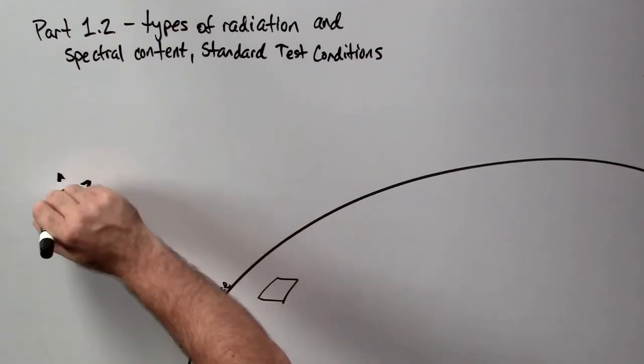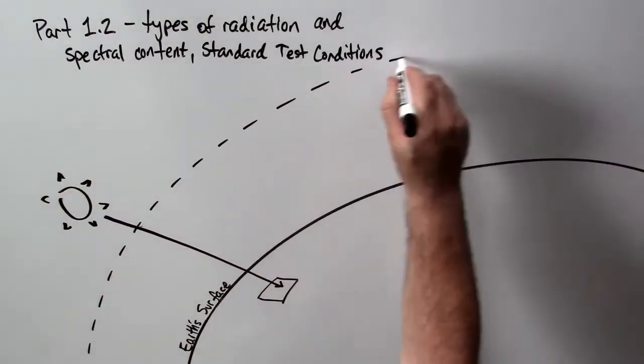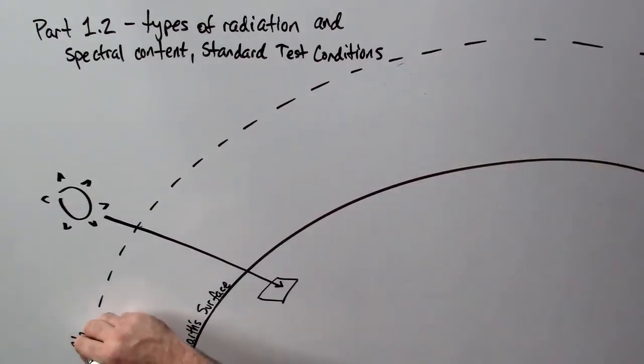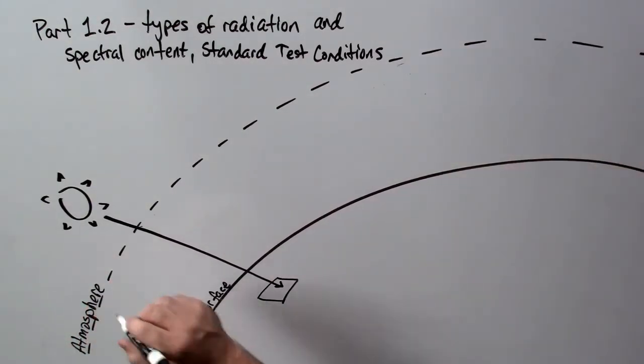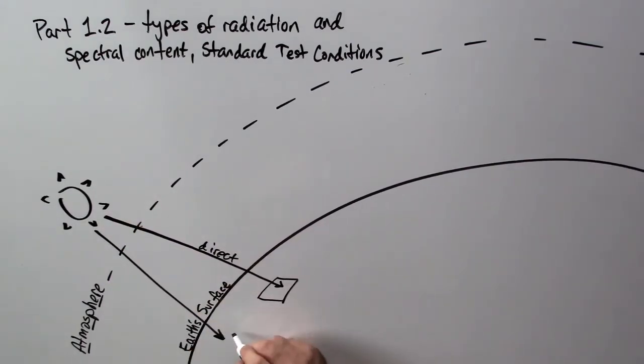Imagine the Earth's surface, and on that surface we have a solar panel. The sunlight that comes from the sun passes through the atmosphere, and that which directly impacts the solar panel is called direct radiation.